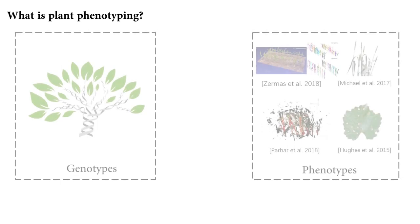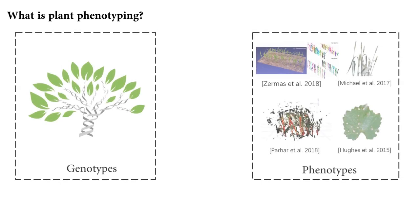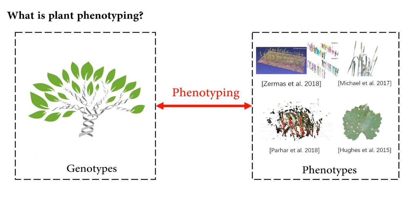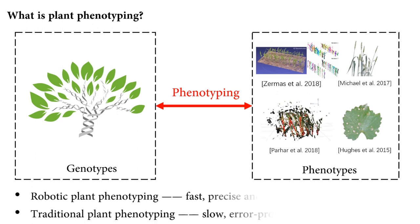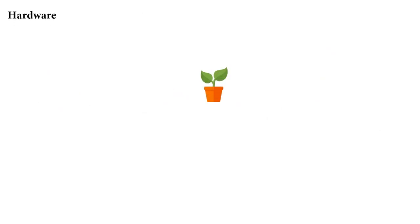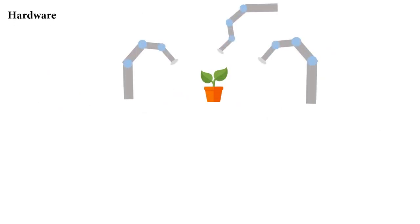Plant phenotyping is an active research area that bridges genotypes and phenotypes. Traditional plant phenotyping heavily relies on manual operations. In this research, we propose a multi-arm system to tackle this problem.